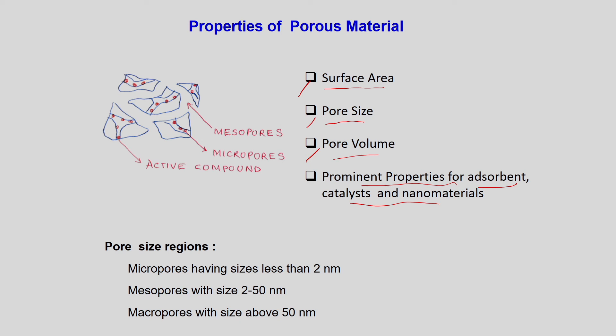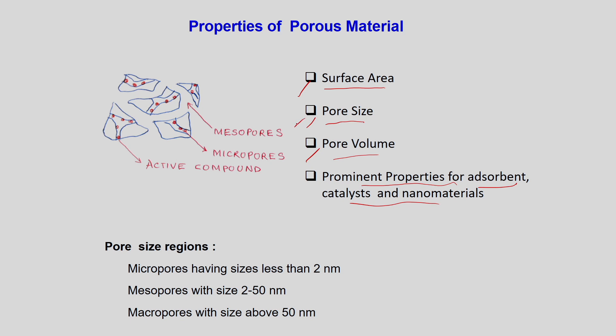Surface area means the total surface on top of a porous material — how much surface is actually allowing incoming molecules to access it. Pore size means the size of the pore, which governs what type of molecule can enter. Based on pore size, we have: micropores with sizes less than 2 nanometers, mesopores with sizes between 2 to 50 nanometers, and macropores with sizes above 50 nanometers.